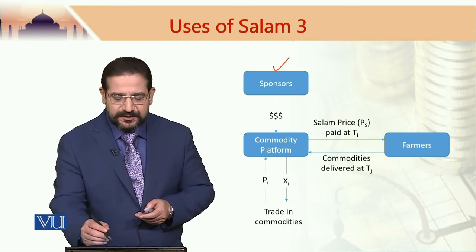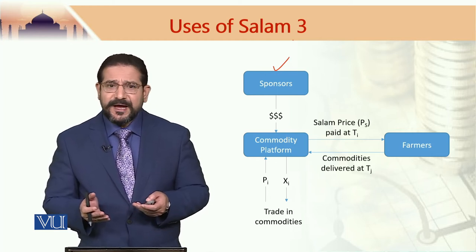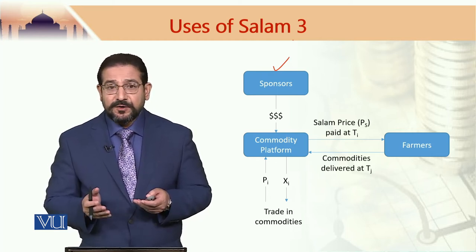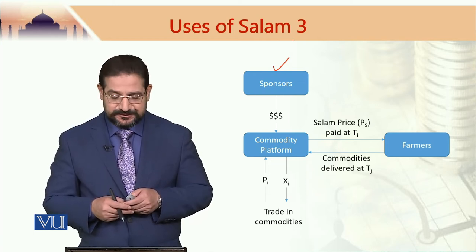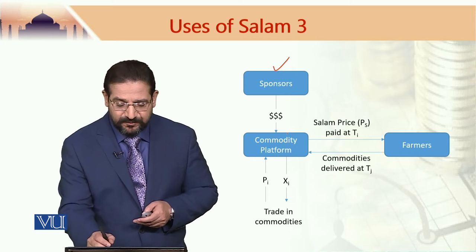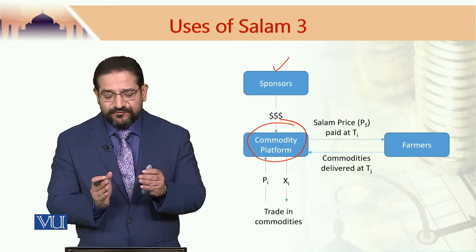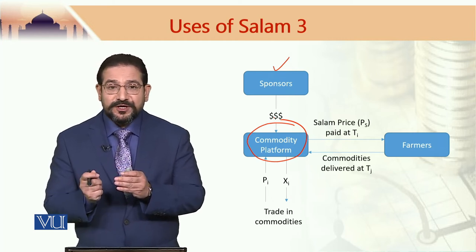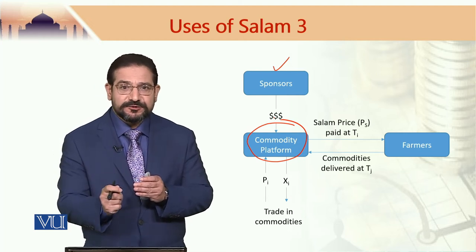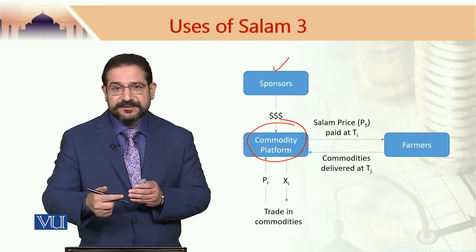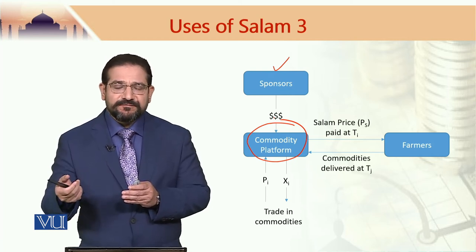In terms of the diagram, we have sponsors — these sponsors could be Islamic banks or any other Islamic financial institution interested in doing a Sharia-compliant business. This commodity platform is set up by the sponsors and offers an opportunity to cash-deficit farmers to sell their agricultural produce on a Salam basis and receive the price upfront, giving them a cash benefit.